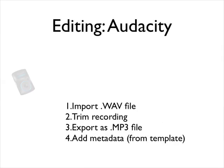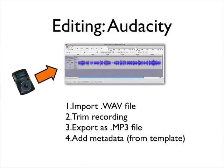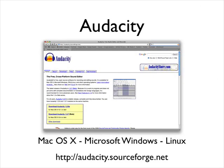After the class, typically the next day, I import these WAV files into Audacity. I trim the recording, removing dead air at the front and back, then export as an MP3 file and add metadata from a template. Audacity is free software that runs on Mac OS X, Windows, and Linux. You can download it from audacity.sourceforge.net. You'll also want to install the LAME MP3 encoder plugin, which allows you to export MP3s — without the plugin you won't be able to do this.